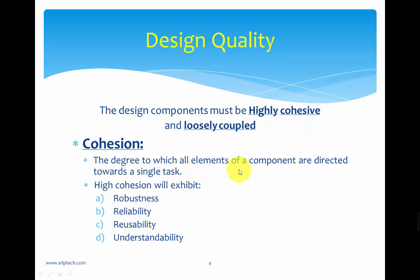Cohesion basically means the degree to which all elements of a component are directed towards a single task. A module performs a particular task and may have multiple components — a component in a module could be as simple as a function. If all the components of a module are directed towards performing one particular task, then that module is highly cohesive. In other words, cohesion is the strength of a module.